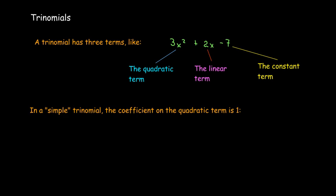Even more importantly, on the quadratic term, we want the coefficient — the number that's multiplied by x² — to be positive 1. So something like m² - 3m - 15, or y²...